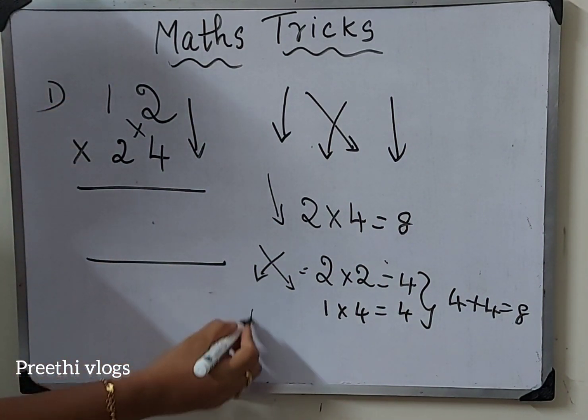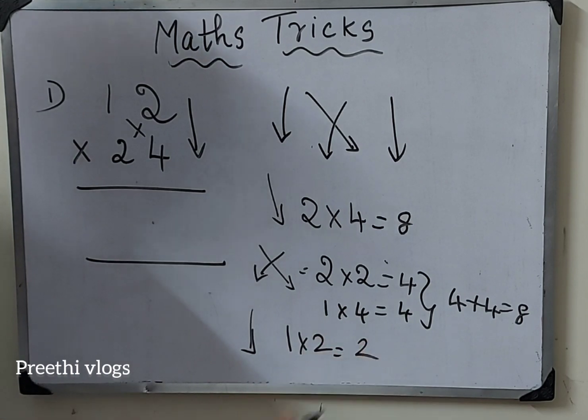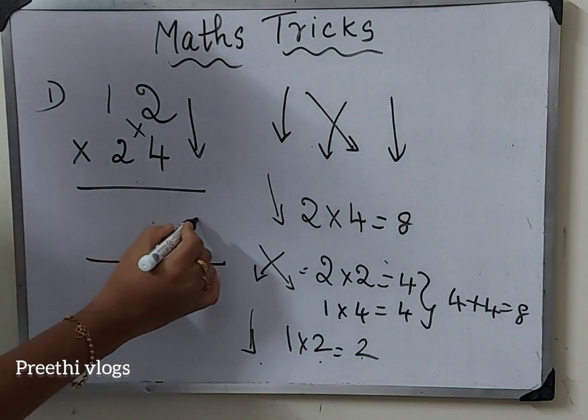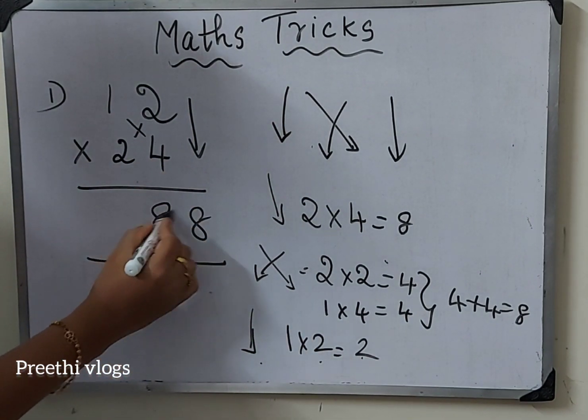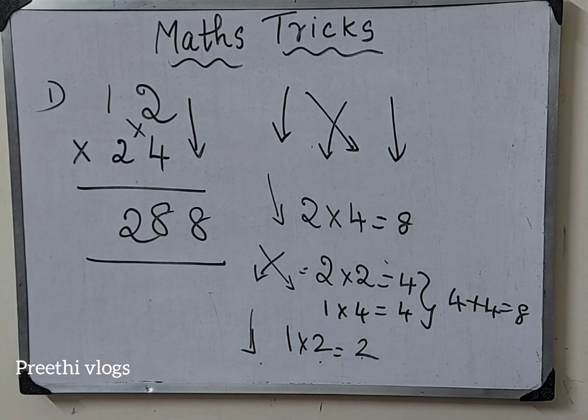One more arrow mark missing. Left side, right side: 1 into 2 equal to 2. In the answer number reverse. So 8, 8, and last is 2. The answer is 288. In this way, easy and simple for 2-digit numbers.